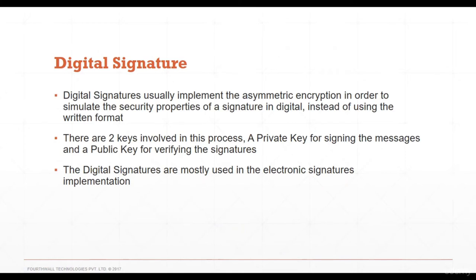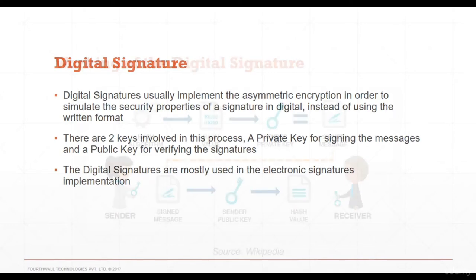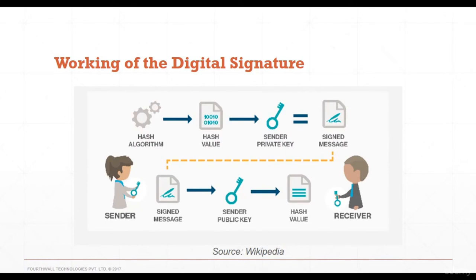Digital signatures implement asymmetric encryption to simulate the security properties of a signature in digital form. A private key is used for signing messages and a public key for verifying signatures. The hashing algorithm creates a hash value, the sender's private key signs the message, and the signed message is sent to the receiver, who can verify it using the sender's public key. Digital signatures are mostly used in electronic signature implementations.